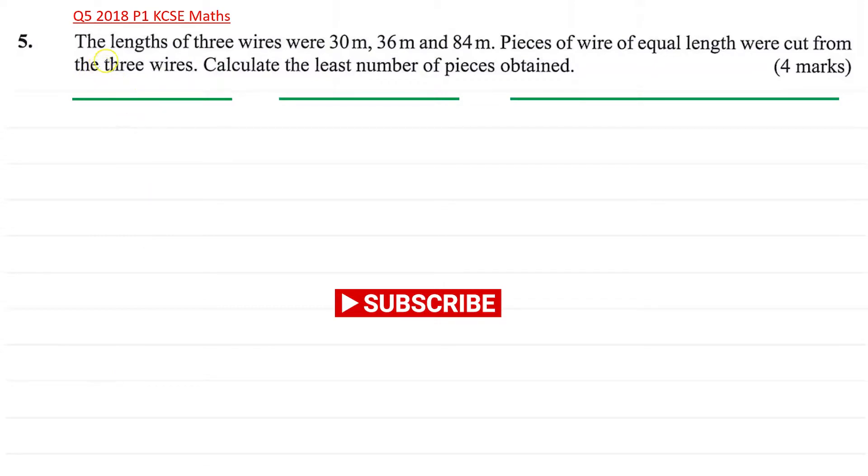In this session we're going to solve question 5 from the KCSE math paper 2018 paper 1. The question says the length of three wires were 30 meters, 36 meters, and 84 meters. Pieces of wire of equal length were cut from the three wires. Calculate the least number of pieces obtained.